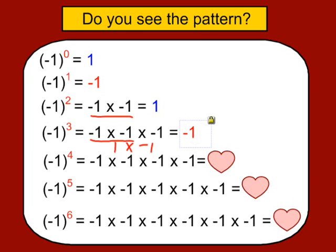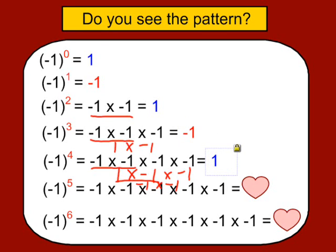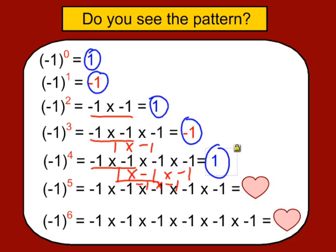I think you're starting to see the pattern already. Negative one to the third power: negative one times negative one is positive one, and then positive one times negative one is negative one. Negative one to the fourth power: negative one times negative one times negative one times negative one — that gives positive one. So negative one to the fifth power is negative one, and negative one to the sixth power is positive one.